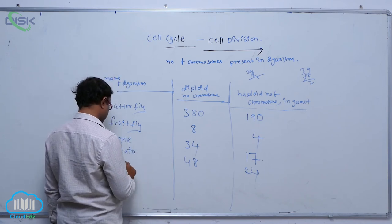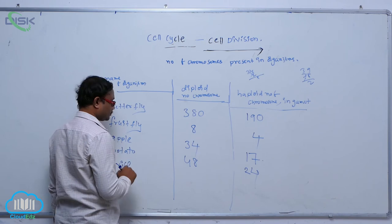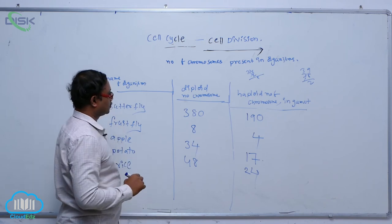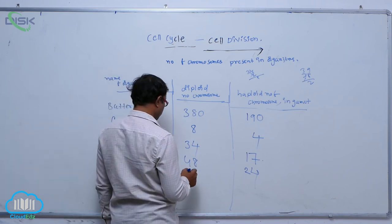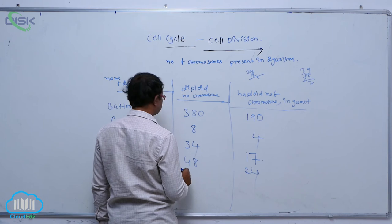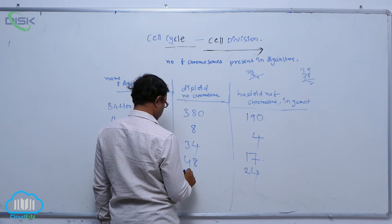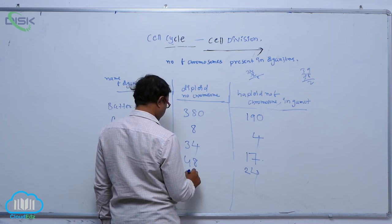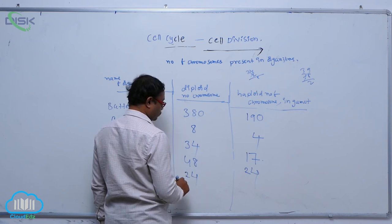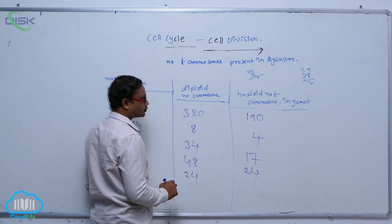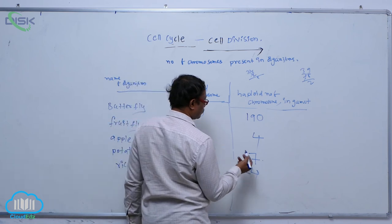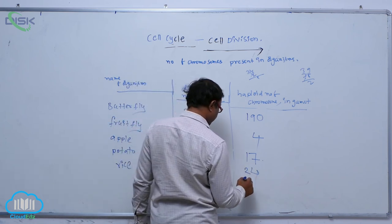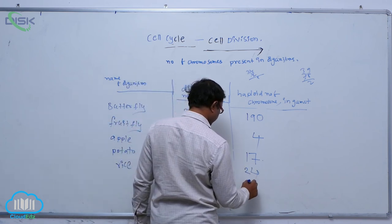In rice, the diploid number of chromosomes is 24, and the haploid number of chromosomes in each gamete is 12.